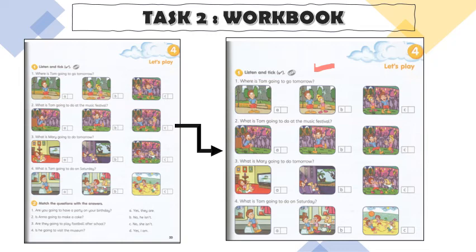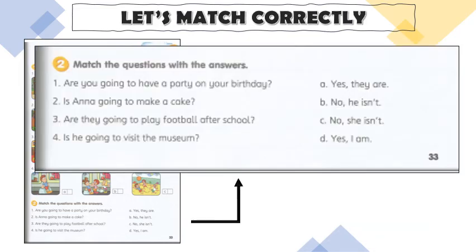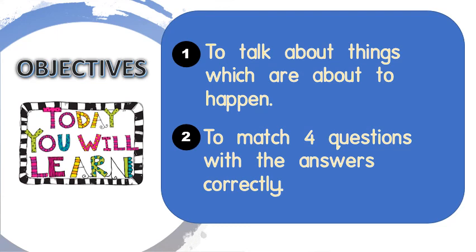Tick the correct answer. Now Activity 2 — you have to match the question with the answer. Read first: 'Are you going to have a party on your birthday?' You just match. To match, you have to identify the subject so you can match the questions to the correct answers. Do your best! That's the end of our lesson. Hopefully by now you can talk about things which are about to happen and match four questions with the answers correctly. Take your time to answer all the tasks given. See you in the next lesson, bye!